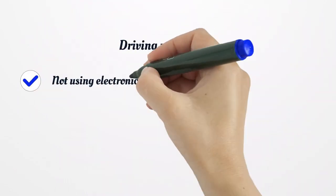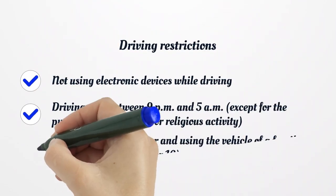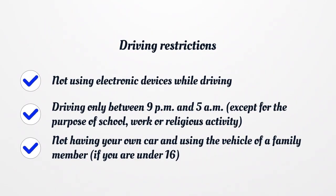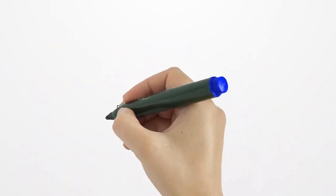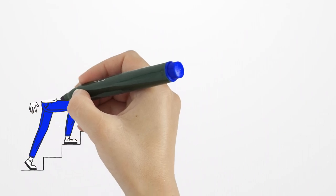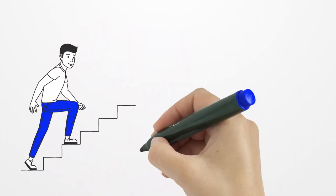Driving restrictions include: not using electronic devices while driving, driving only between 9 p.m. and 5 a.m., and not having your own car — you must use the vehicle of a family member. Steps to get a North Dakota Full Driver's License.